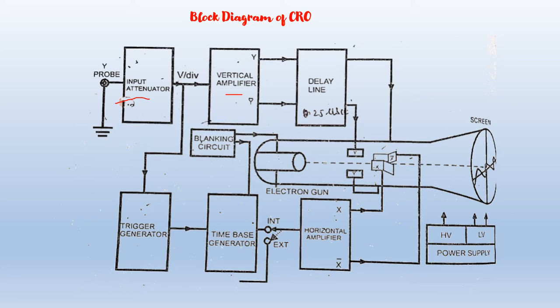Delay Line: The next block is the delay line. The delay line delays the arrival of the input waveform at the vertical deflection plates until the trigger and time-based circuits start the sweep of the beam. The delay line produces a delay of 0.25 microseconds so that the leading edge of the input waveform can be viewed even though it was used to trigger the sweep.